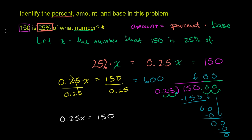Let me do the base in green. So the base is the number you're taking the percent of. The amount is the quantity that that percentage represents. So here, we already saw the percent is 25%. That's the percent. The number that we're taking 25% of, or the base, is x. You know, this right here, what number x?